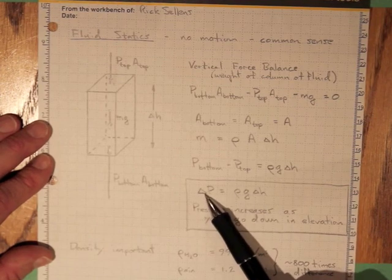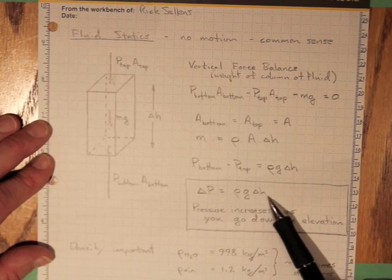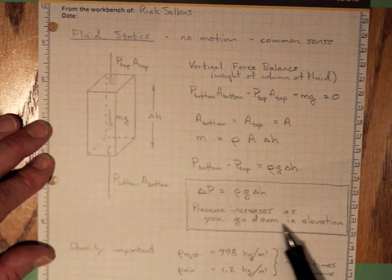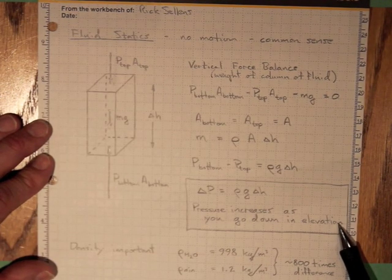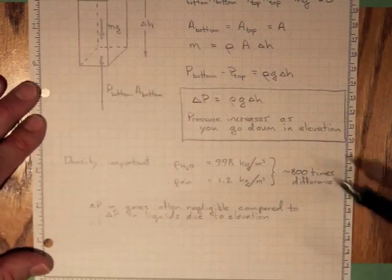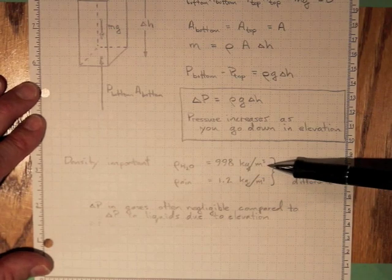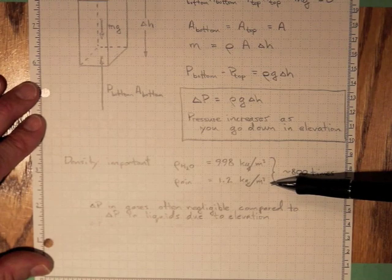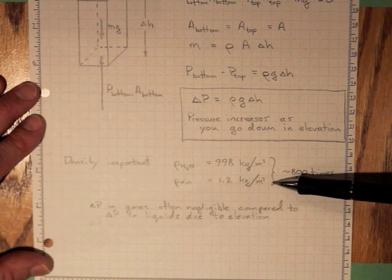Or once again delta P equal to rho G delta H. Pressure increases as you go down in elevation. Now density is going to turn out to be really important in these situations. Density of water is about a thousand kilograms per cubic meter while the density of air is only about one kilogram per cubic meter.